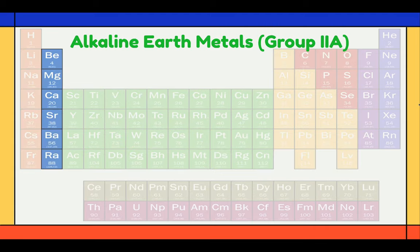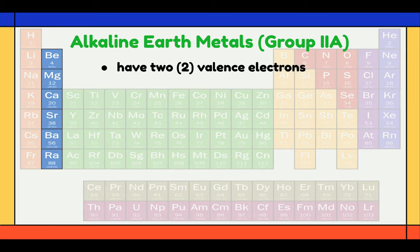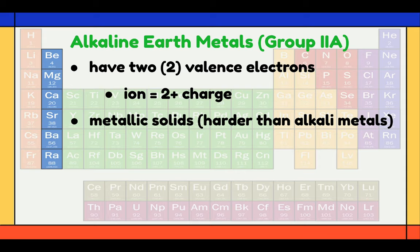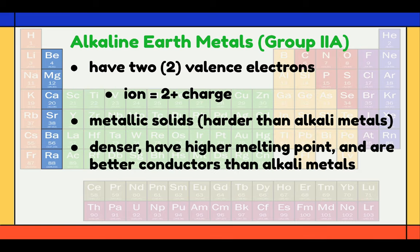Next, we have the alkaline earth metals, or Group 2A. They contain 2 valence electrons that they will give up, so the ion form has a 2-positive charge. For example, the charge of the calcium ion is 2 positive. They are metallic solids which are harder than alkali metals, and they are denser, have higher melting points, and are better conductors than alkali metals.